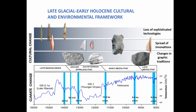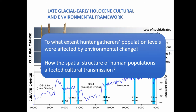These changes don't follow a simple pattern — they don't go from simple to more complex. We can find the loss of sophisticated technologies at the end of the Upper Paleolithic, the spread of technological innovations, and changes in graphic traditions. These changes affect the way in which people communicated and transmitted their technological knowledge. The two main research questions are: to what extent were hunter-gatherer population levels affected by climate and environmental change, and how did the spatial structure of human populations affect cultural transmission processes through generations.